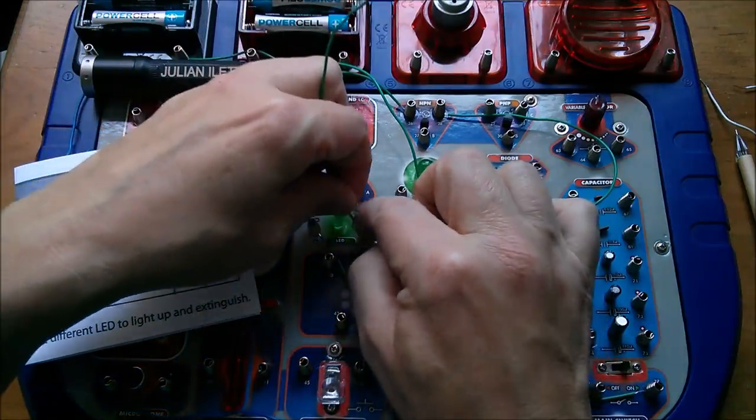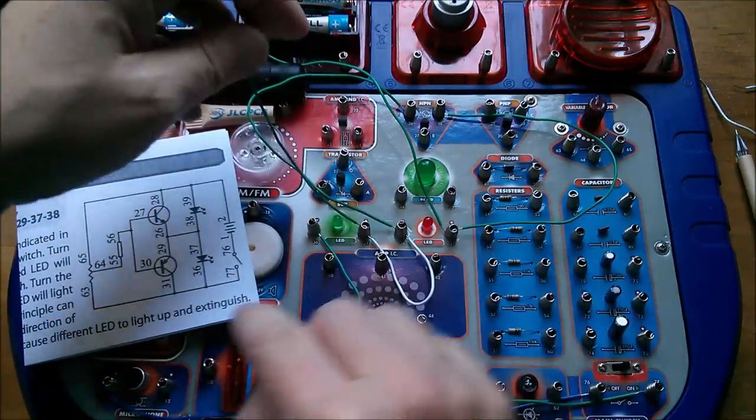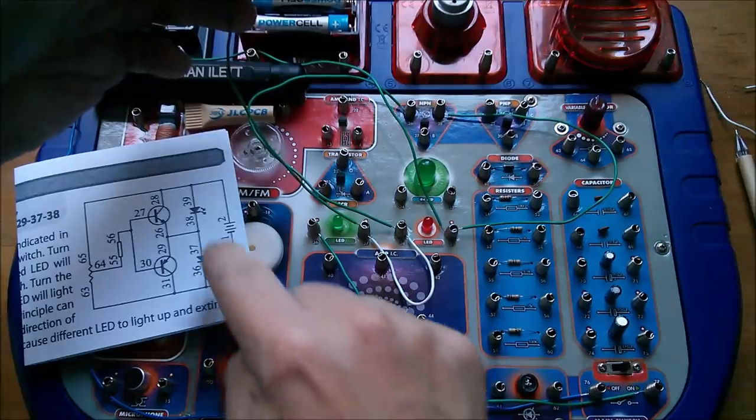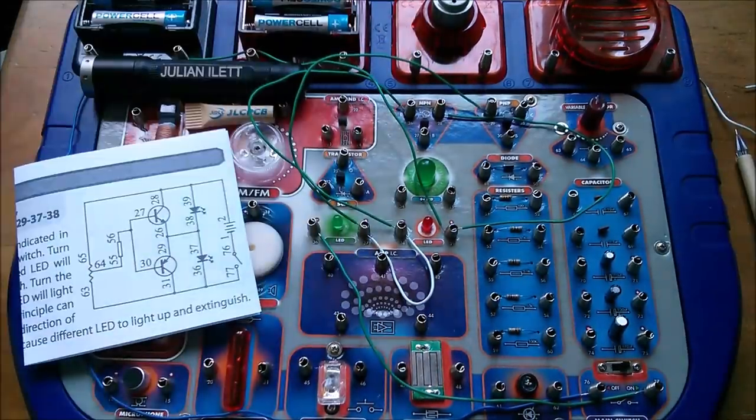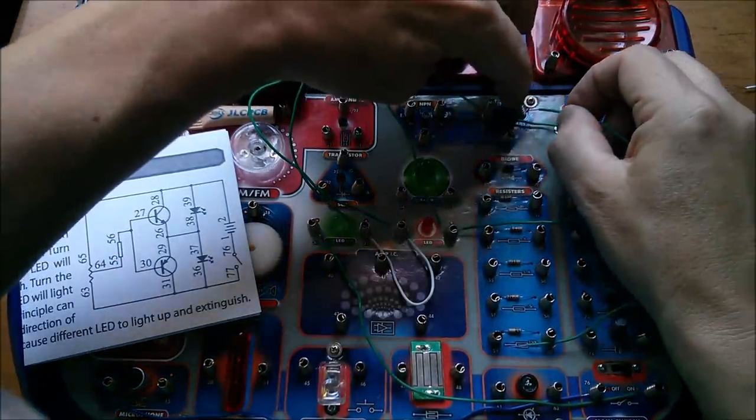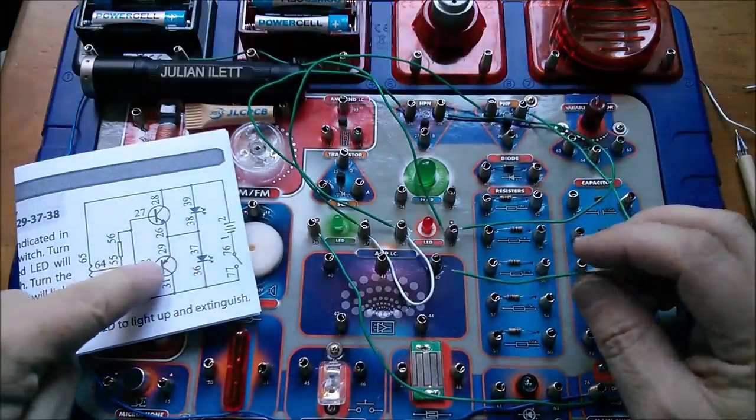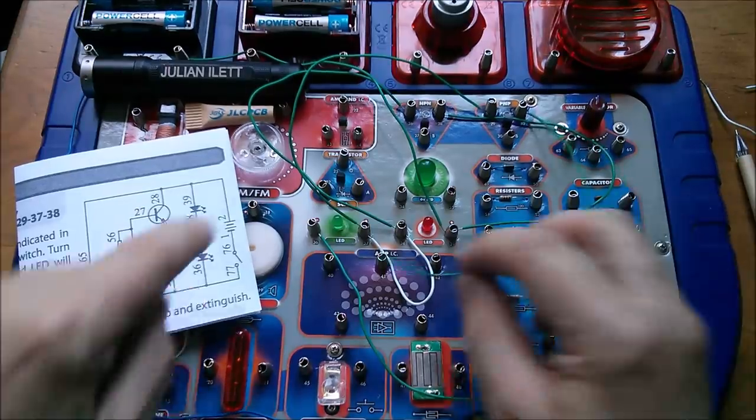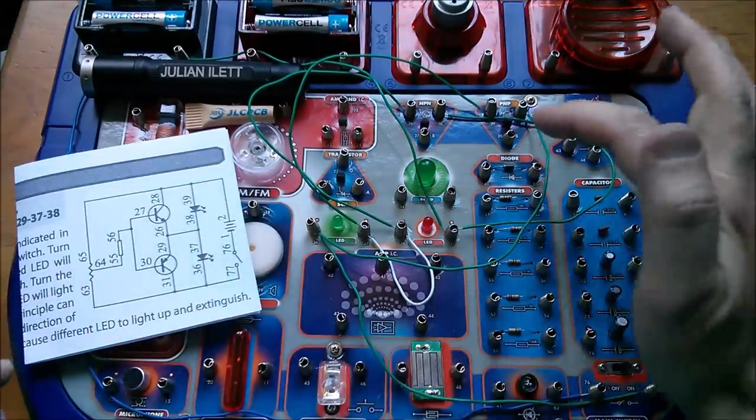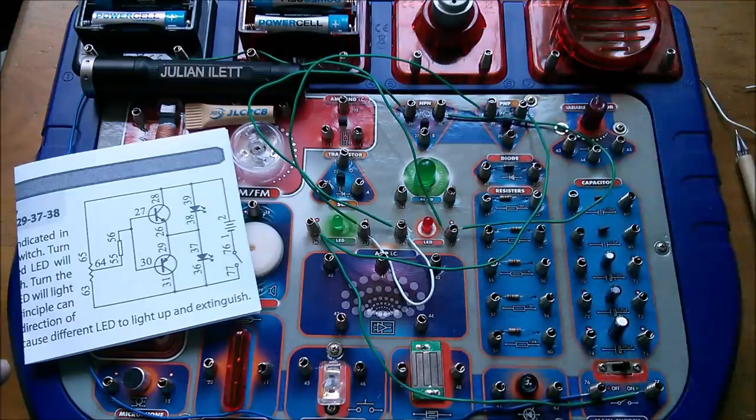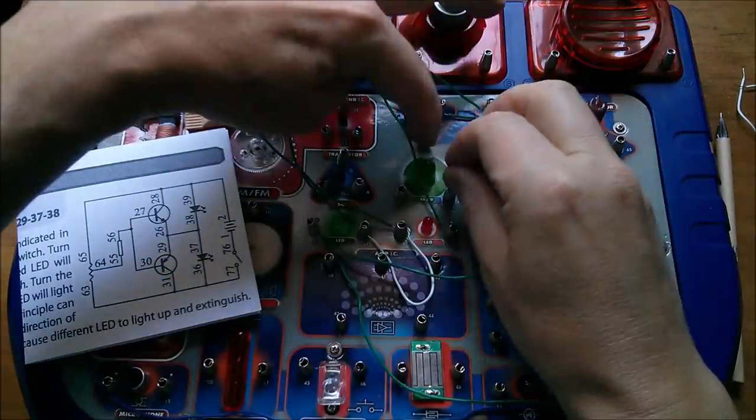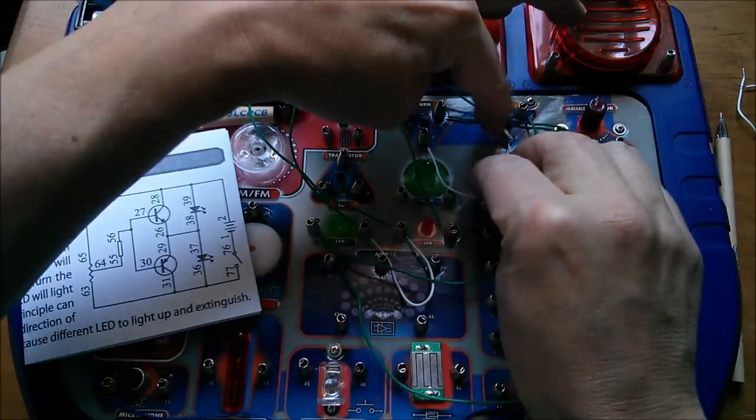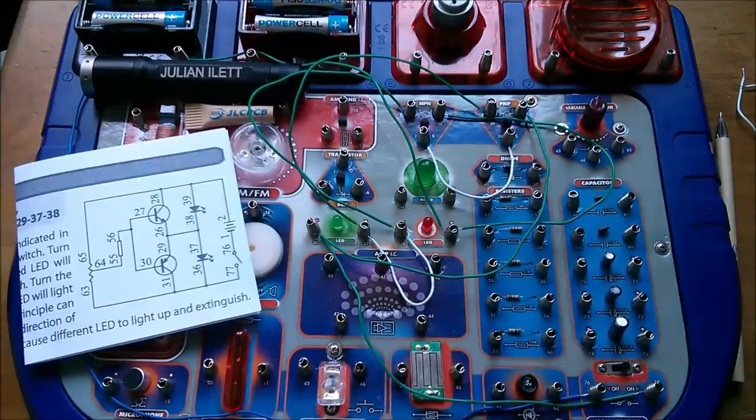So I've got 28 collector of the NPN to positive, emitter of the NPN to this midpoint. Now I want emitter of the PNP also to this midpoint, so that's 37 to 29. And then another wire is 31, which is collector of the PNP, which goes to the most negative point. Now I'm going to link the two bases of the transistors with a short link wire.